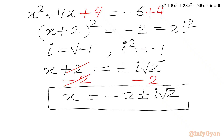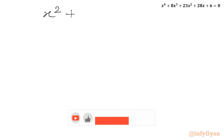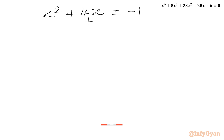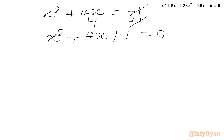Now we solve the second equation: x squared plus 4x equal to minus 1. Adding 1 to both sides gives x squared plus 4x plus 1 equal to 0. This time we use the quadratic formula. Comparing with ax squared plus bx plus c equal to 0, we get a equal to 1, b equal to 4, c equal to 1.